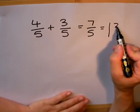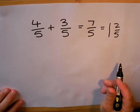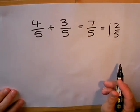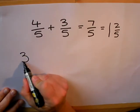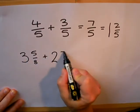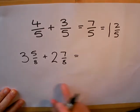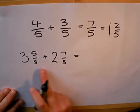The same thing can happen when you're adding together mixed numbers. For example, three and five eighths and two and seven eighths. Again this is relatively simple because we have two numbers at the bottom that are exactly the same.